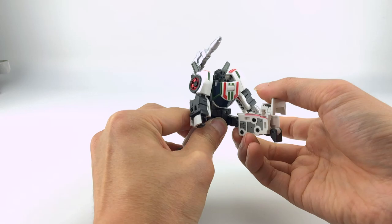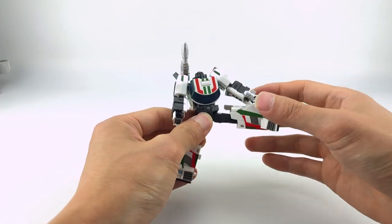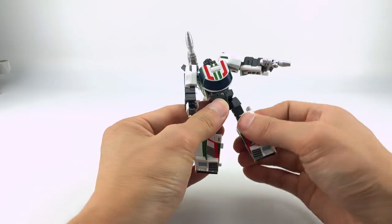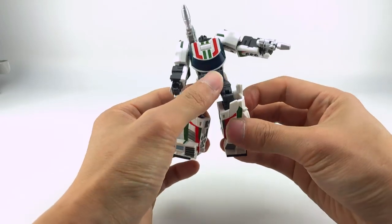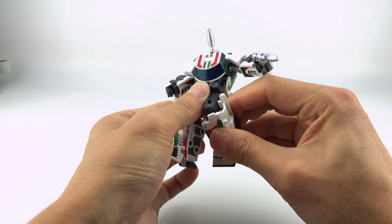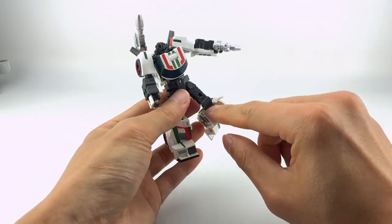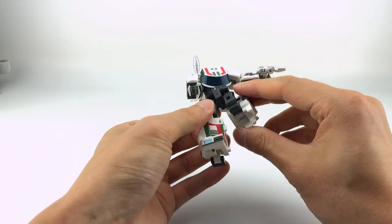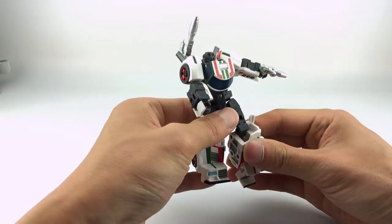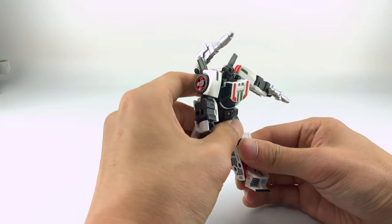He has ball jointed hips, so you can go forward, back, and out to the side. He also has a separate thigh swivel, a knee bend at this hinge here, and I guess you could theoretically use this hinge here to get kind of a double knee bend, so you can go all the way in, but then that really breaks up the look of his leg.